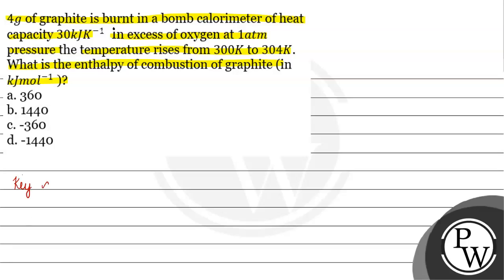The key concept for this question is bomb calorimeter. A bomb calorimeter is used to calculate heat released or absorbed at constant volume, which equals delta U — the change in internal energy. Heat absorbed or released at constant pressure equals the change in enthalpy, which is delta H.